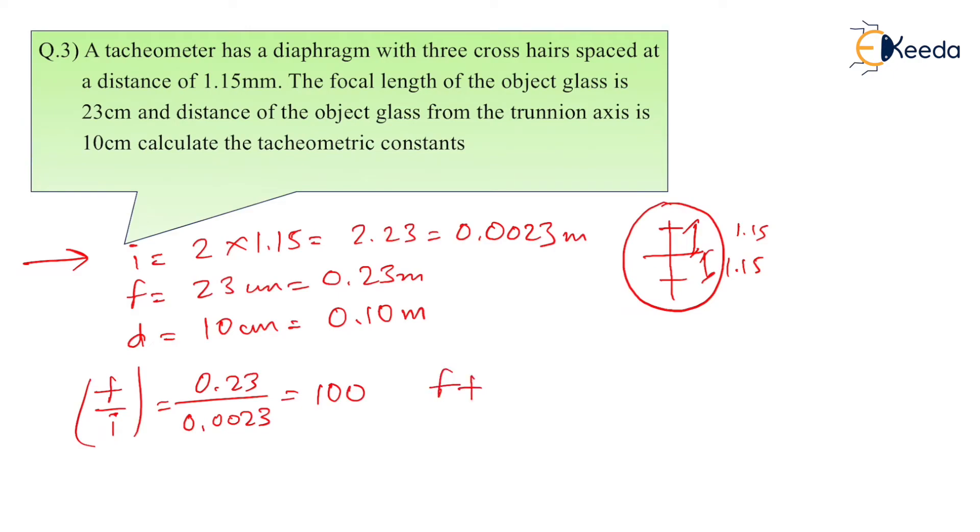And the second constant is F plus D, that is known as additive constant. As we know, F is 0.23 and D is 0.10. We can calculate as 0.33. So by knowing the values of I, F, and D, we can calculate the constants of tachometer. Thank you.